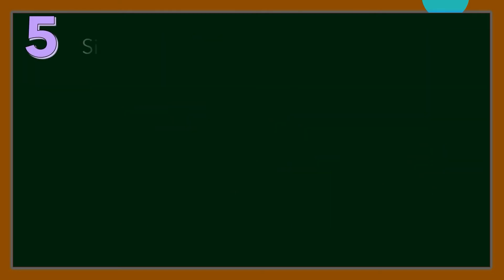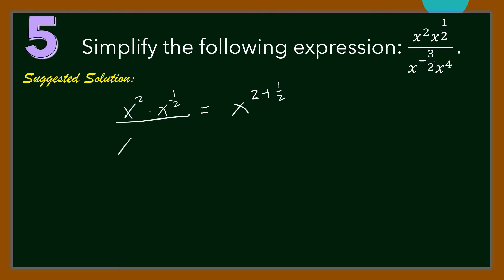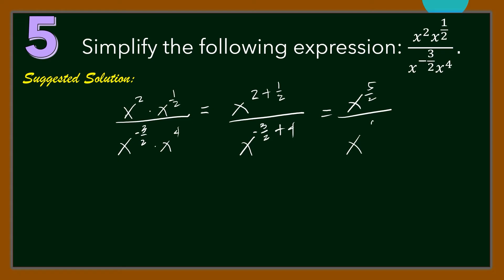Number 5: Simplify x squared times x raised to 1 half, all over x raised to negative 3 halves times x raised to the fourth power. For our solution, let us use the rules of exponents. In the numerator, x squared times x raised to 1 half equals x raised to 2 plus 1 half, which is x raised to 5 halves. In the denominator, x raised to negative 3 halves times x raised to the fourth power equals x raised to negative 3 halves plus 4, which is also x raised to 5 halves. Hence, the simplified form of the expression is 1.